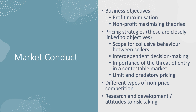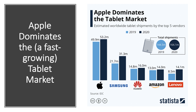Conduct is essentially the actual behavior of firms in the market. The tablet sector is a fast-growing example: 164 million tablets were shipped globally in 2020, up significantly on 2019. There's an enormous battle between Apple, Samsung, Huawei, Amazon, and Lenovo — with Apple dominating. As economist Jean Tirole says, you should judge firms not by what textbook theory says they might do, but by what they actually do. Businesses can have monopoly power but not necessarily set the monopoly price.